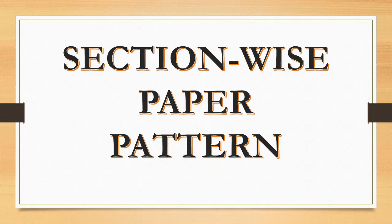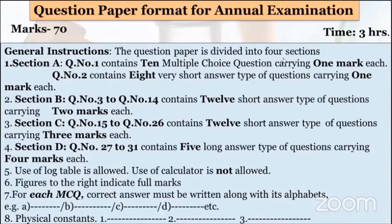Now I am going to tell you about the section-wise paper pattern. This paper is divided into 4 sections: Section A, Section B, Section C, and Section D. Section A contains 2 questions — Question 1 and Question 2. Question 1 has 10 multiple choice questions carrying 1 mark each. Question 2 contains 8 very short answer type questions carrying 1 mark each. You have to write only 1 word, maximum 1 sentence — not more than that.